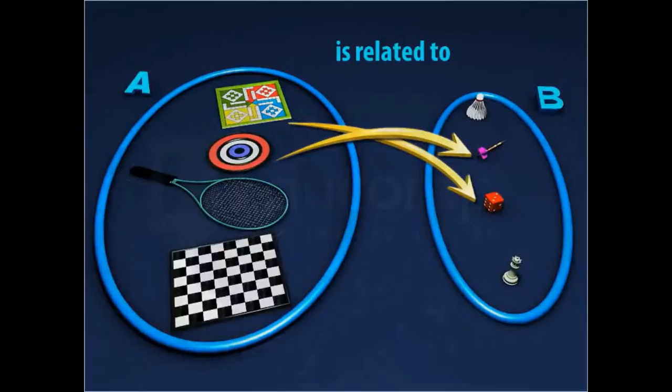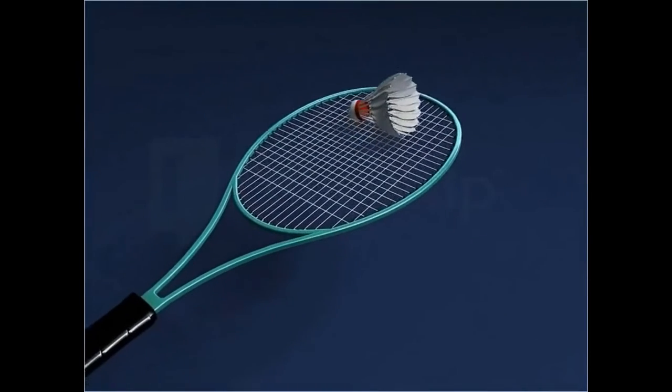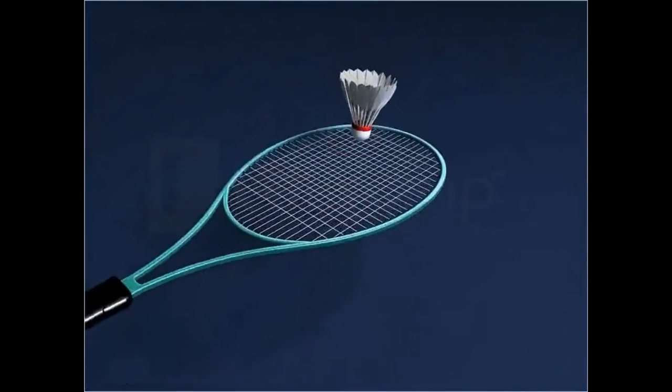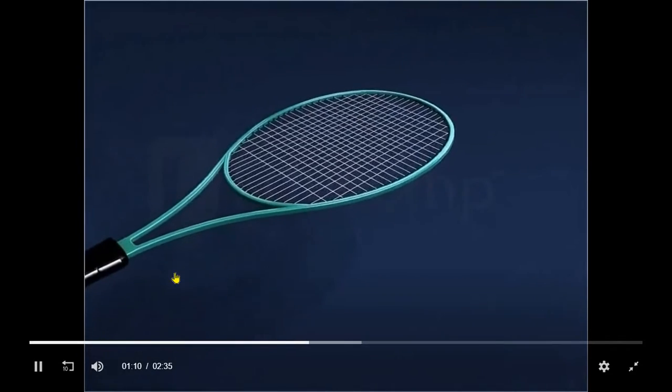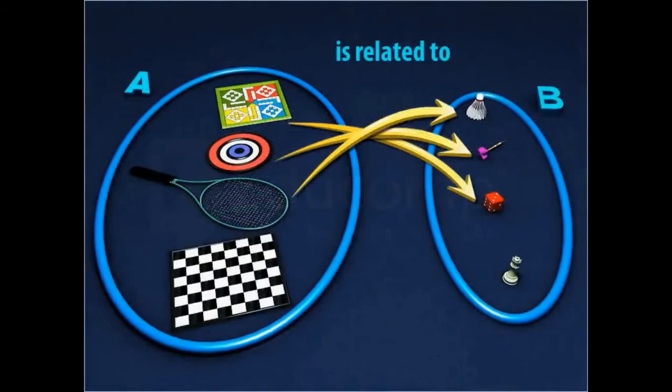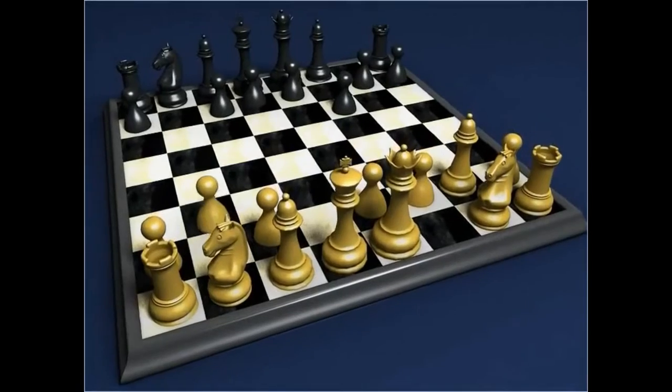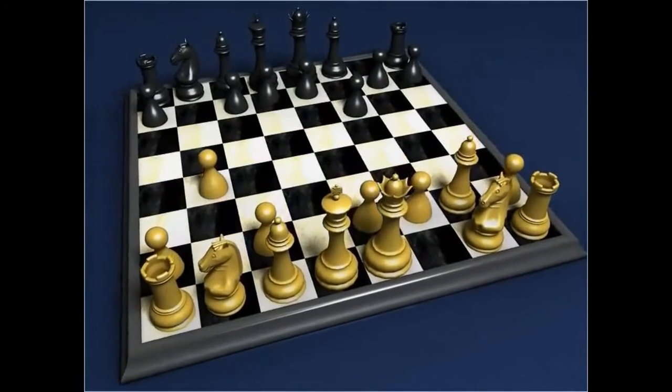Similarly, a badminton racket in the first set is related to the shuttlecock in the other set. A chess board in set A is related to a pawn in set B.